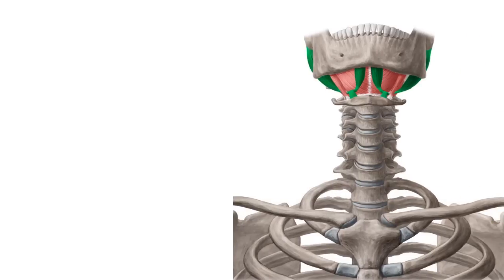From below, the mouth floor is reinforced by the anterior bellies of the digastric muscles. The suprahyoid muscles do not only form the floor of the mouth, but play an important role in chewing, swallowing, and speech. In combination with the infrahyoid muscles, they are responsible for the positioning of the hyoid bone.